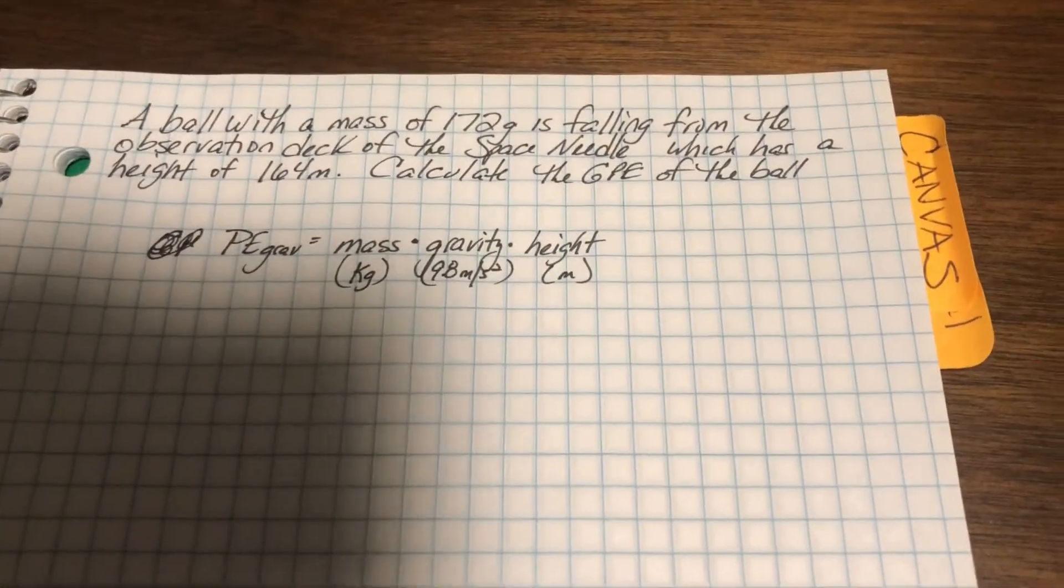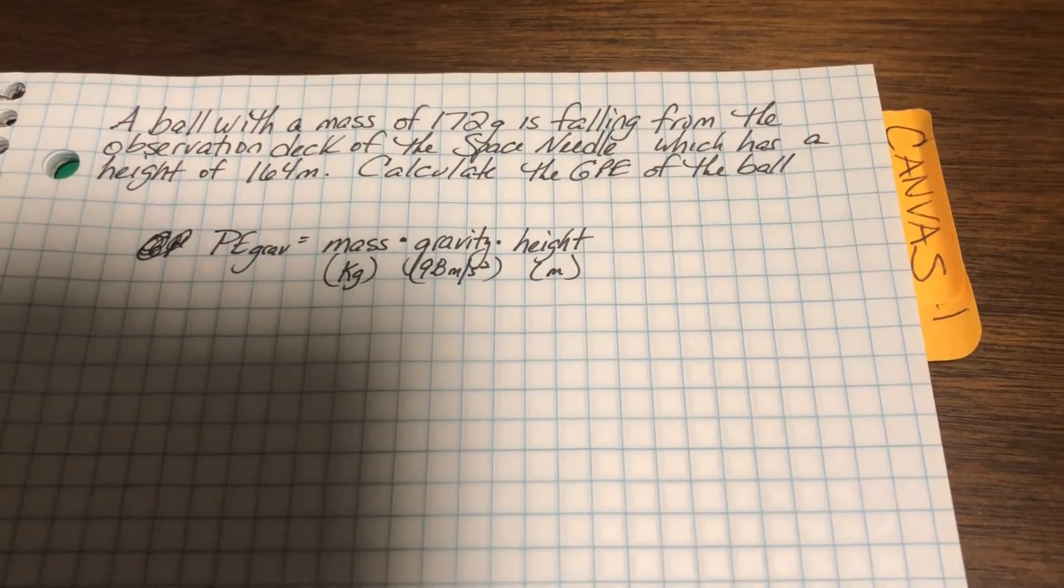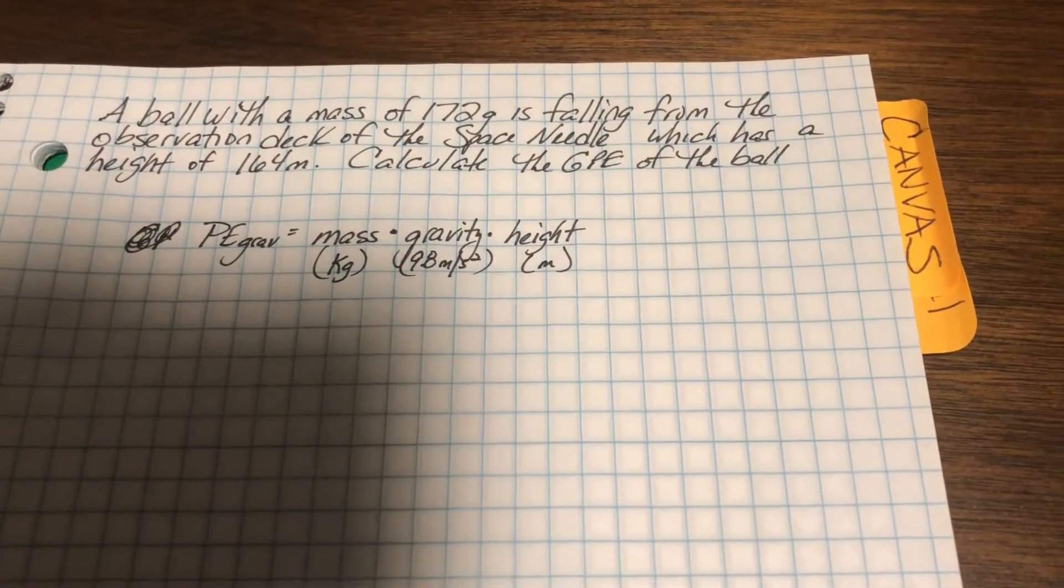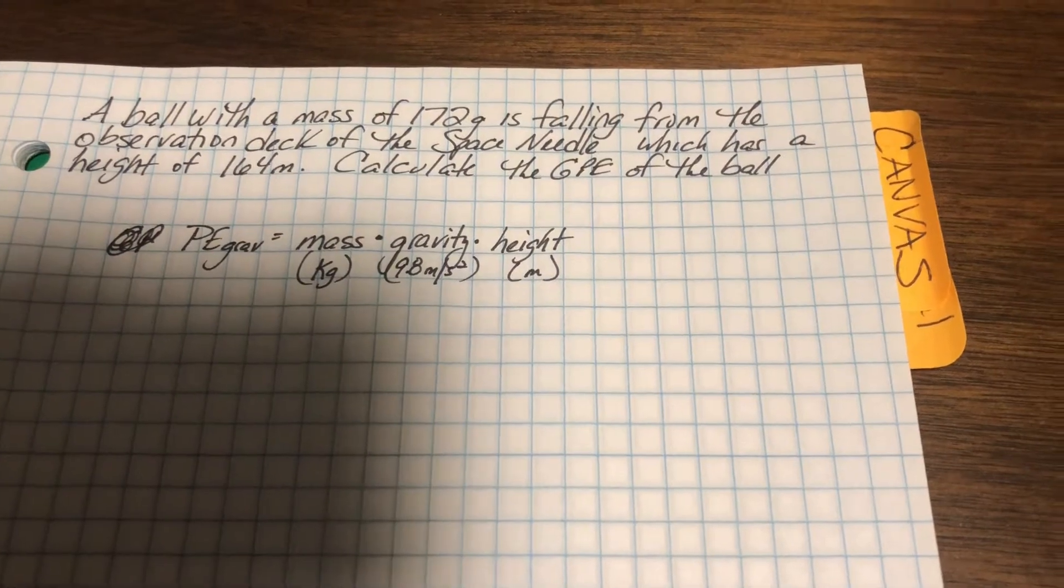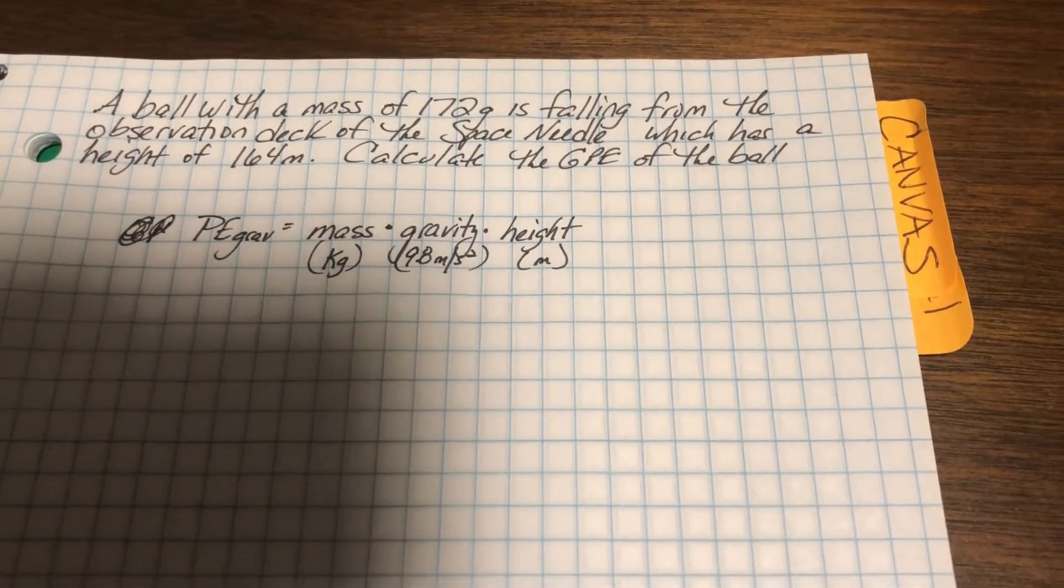All right, so we have a ball with a mass of 172 grams. It's falling from the observation deck of the Space Needle, which has a height of 164 meters.